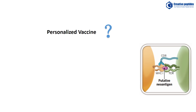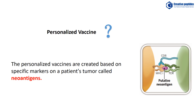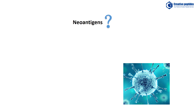What is a personalized vaccine? The personalized vaccines are created based on specific markers on a patient's tumor called neoantigens. But what are neoantigens? An implicit conclusion from clinical data is that in a substantial fraction of patients, the endogenous T-cell compartment is able to recognize peptide epitopes that are displayed on major histocompatibility complexes on the surface of malignant cells.